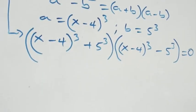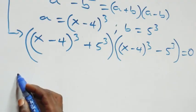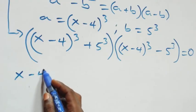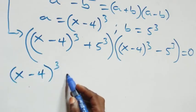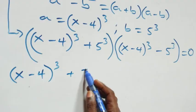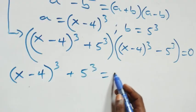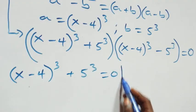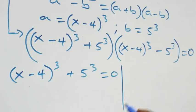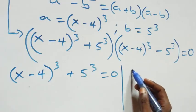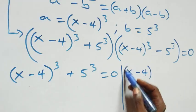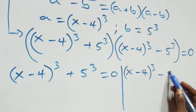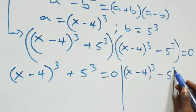Then here we have two possible cases. The first case: (x minus 4) raised to the power 3 plus 5 raised to the power 3 equals to 0. The second case: (x minus 4) raised to the power 3 minus 5 raised to the power 3 equals to 0.